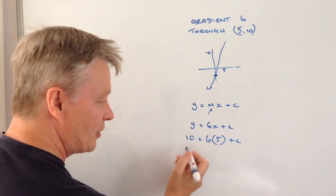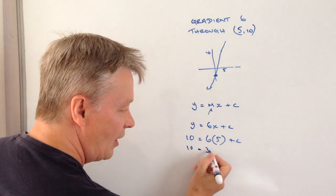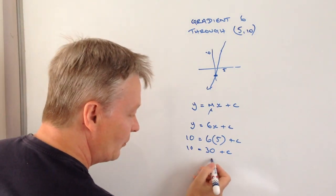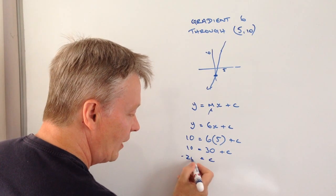Okay, so a little bit of algebra. I've got ten equals thirty plus c. If I take thirty away from both sides, I end up with c being equal to minus twenty.